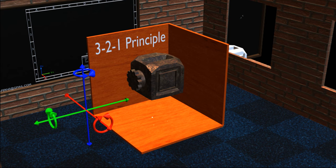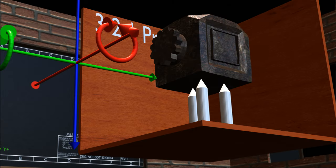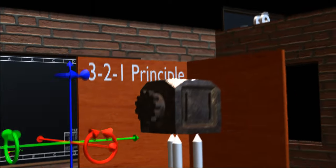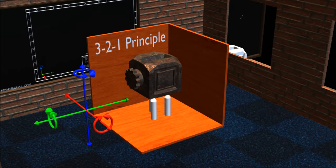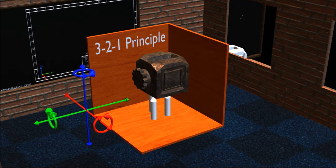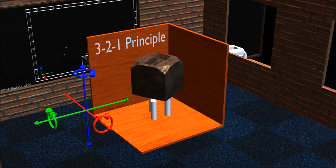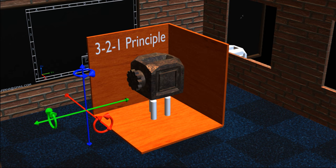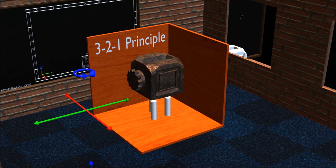As the name suggests, first we will consider three points as seen on the screen. When we touch these three points to the object, the object now cannot move along the Z axis, cannot rotate about the Y axis, and cannot rotate about the X axis. But the object can still move along the X axis and Y axis, and it can also rotate about the Z axis. So with this, we constrain translational motion along Z axis, and rotational motion about X axis and Y axis — that is Z transitional, X rotational, and Y rotational motion.